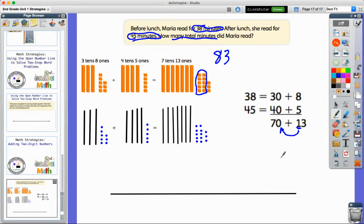I'm also going to show it to you on the open number line. That's a strategy we use a lot in second grade. So we're going to start with the number we have first in our problem, and that would be 38. And I know that I have to add 45 to that.